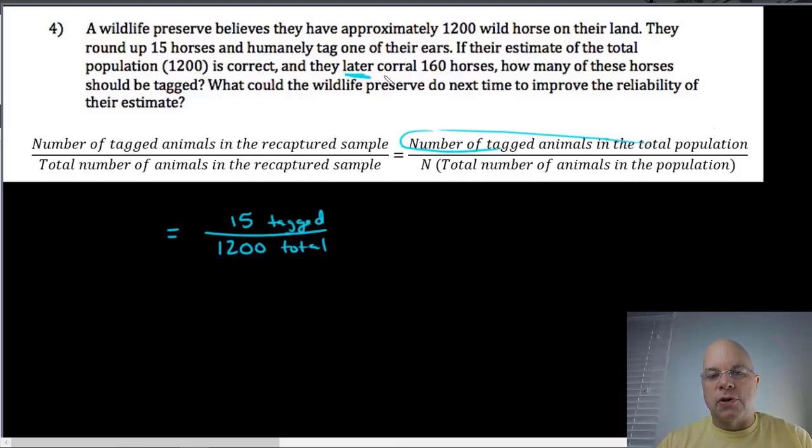So here's the keyword, later. So this is our recaptured sample. They later corral 160 horses. How many of these horses should be tagged? So our ratio of tagged to total in the recaptured sample should be equivalent to our ratio of tagged to total in the total population. I feel confident that putting tagged and total is going to make these proportions easier to set up without having to use this as a guideline. So later they corral 160 horses, that's the total number of horses in the recaptured sample. We want to know how many of those horses would be tagged, that's our unknown x.